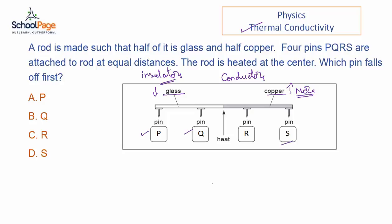Now the heat is transferred from the center. We know that glass will not conduct heat because it is an insulator, and copper conducts heat as it is a metal. The first pin to fall from this rod is pin R because of the conductivity of copper.